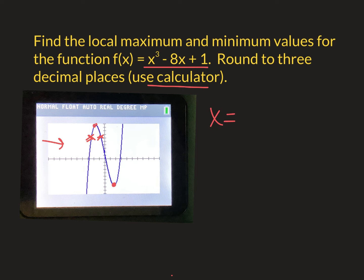The minimum value, or actually the min occurs at negative 1.633. That's three decimal places. That's the x-coordinate at the maximum. Okay, so that's the local max right there.